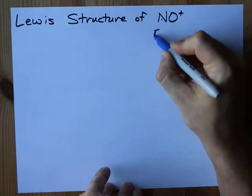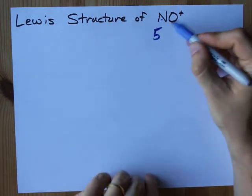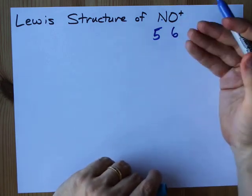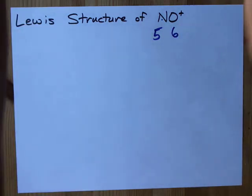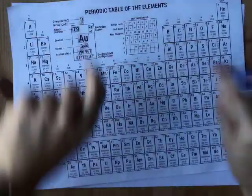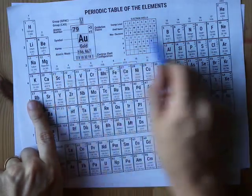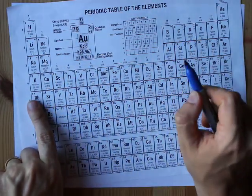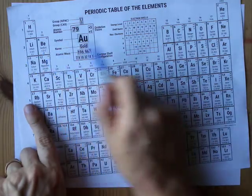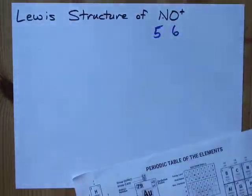Nitrogen brings 5 electrons with it, and oxygen brings 6 in its valence shell. If I went to the periodic table, I'd note that nitrogen was the 1, 2, 3, 4, 5th element in its row, and oxygen is the 1, 2, 3, 4, 5, 6th element in its row.